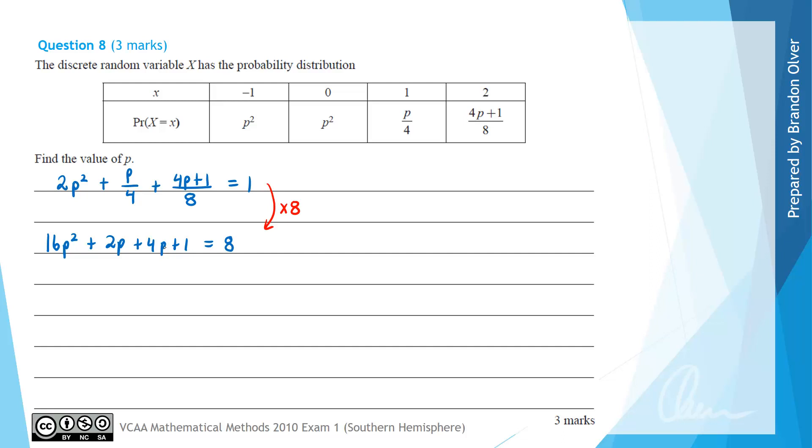The next thing that we have to do if we're going to solve what is now a quadratic equation is get it equal to 0. So therefore we get that 16p squared and then we have 2p plus 4p gives plus 6p, and then we need to subtract 8 which will give minus 7 equals 0.